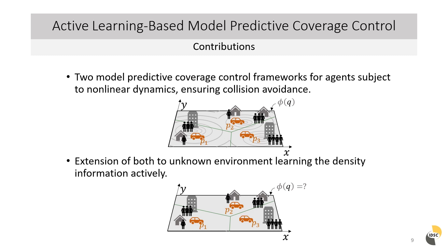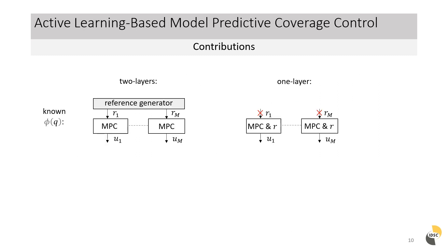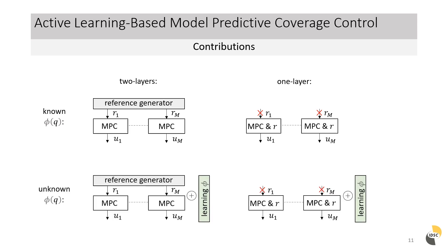Furthermore, both frameworks have been extended to the case in which a density function is initially unknown and needs to be actively learned by the agents. The developed frameworks are referred to as two-layer and one-layer model predictive coverage controllers, differing by a reference-generating layer. Their individual extension to an initially unknown environment results in four different frameworks for which convergence and recursive feasibility guarantees have been derived.